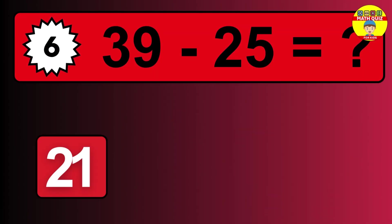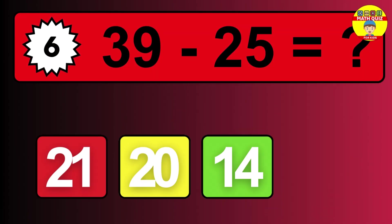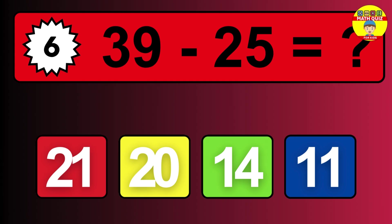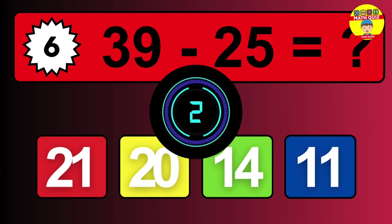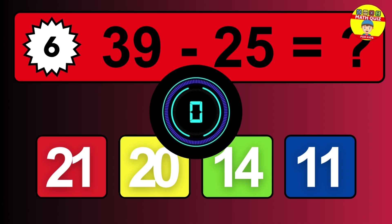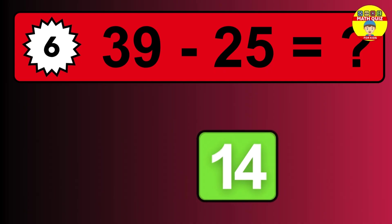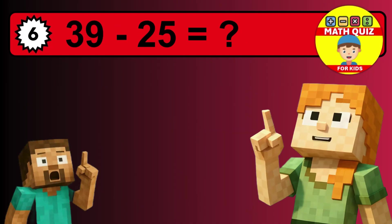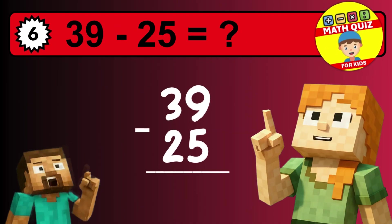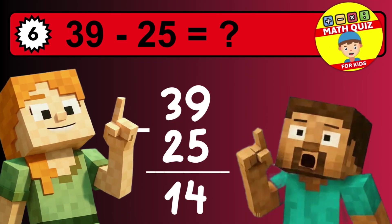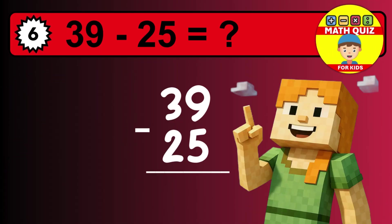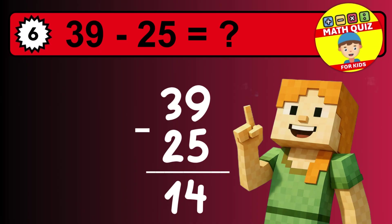What is 39 minus 25? Time to think. Let's solve this step by step. We start with the units: 9 minus 5 is 4. Then we go to the tens: 3 minus 2 is 1. The final answer is 14.